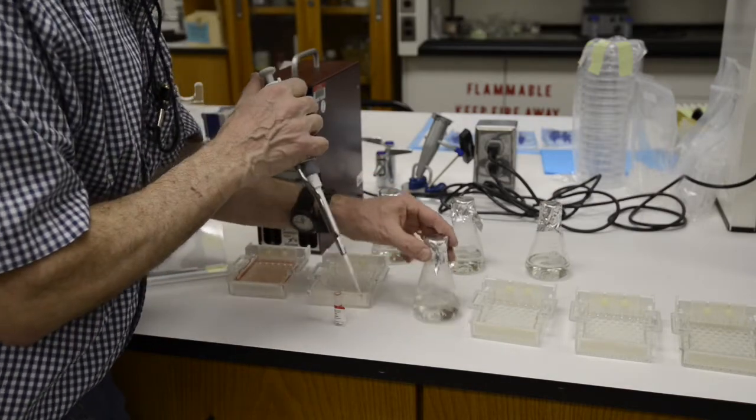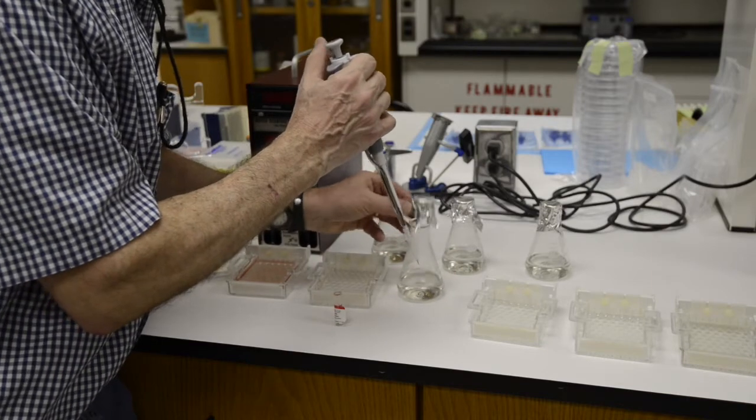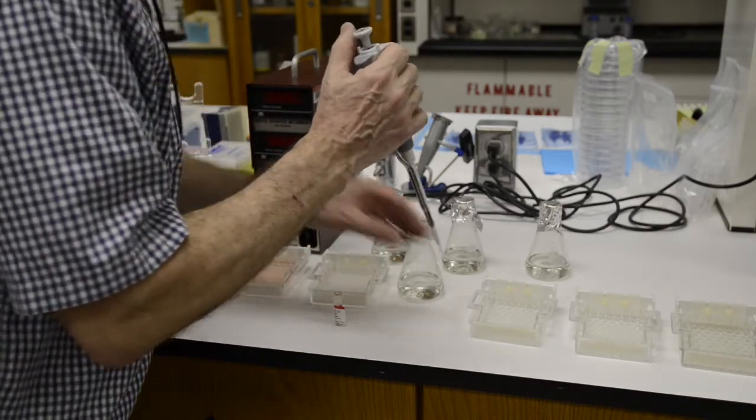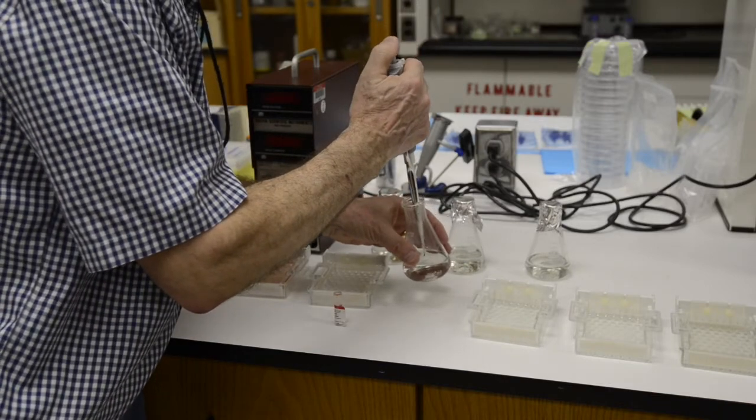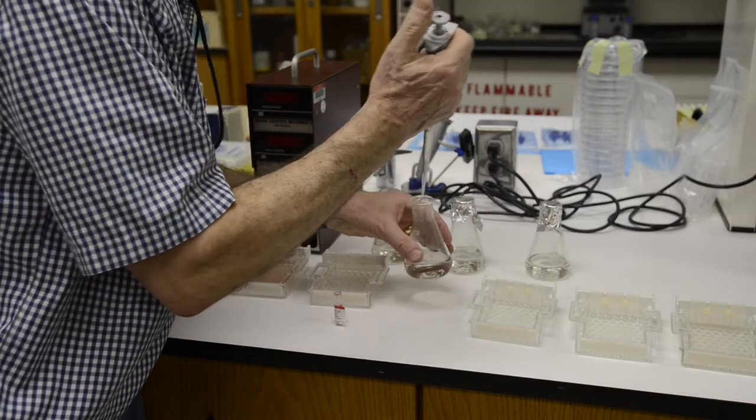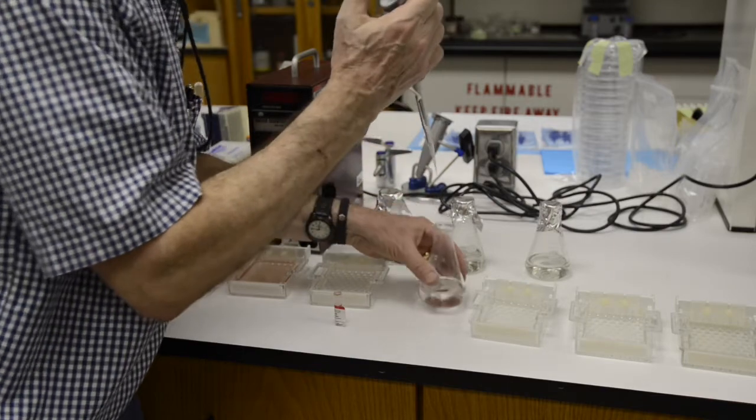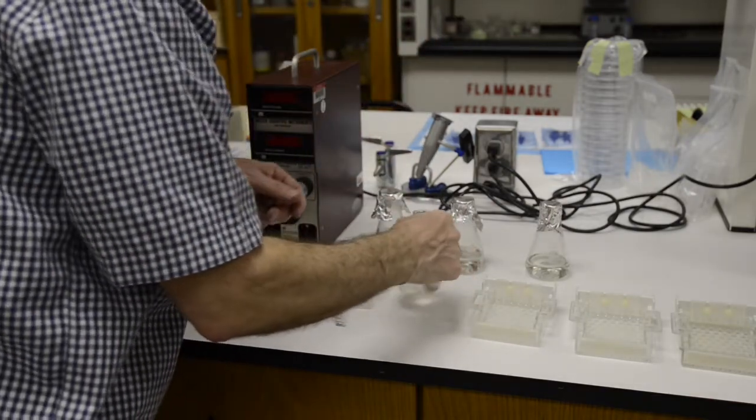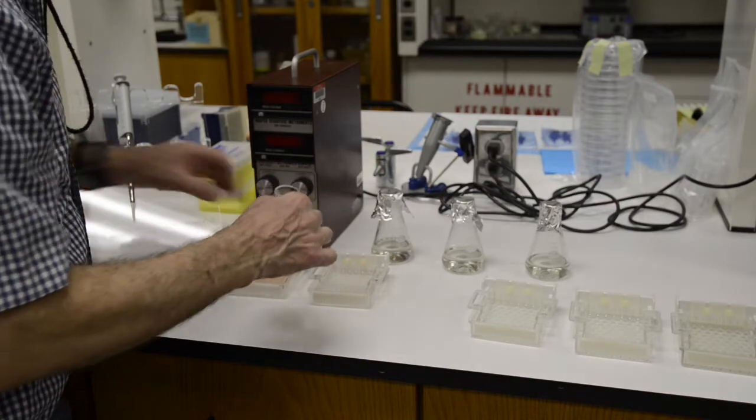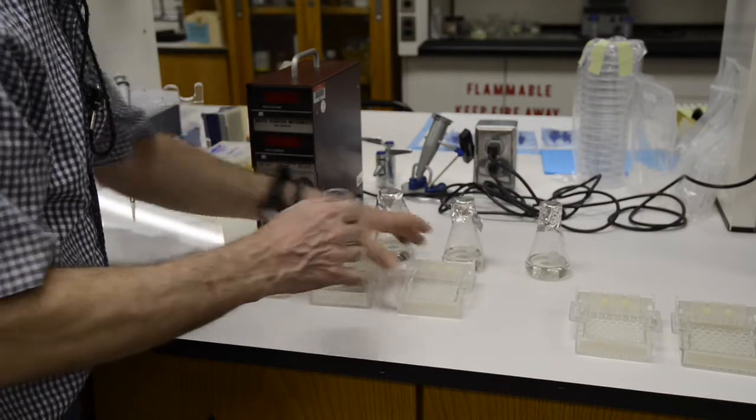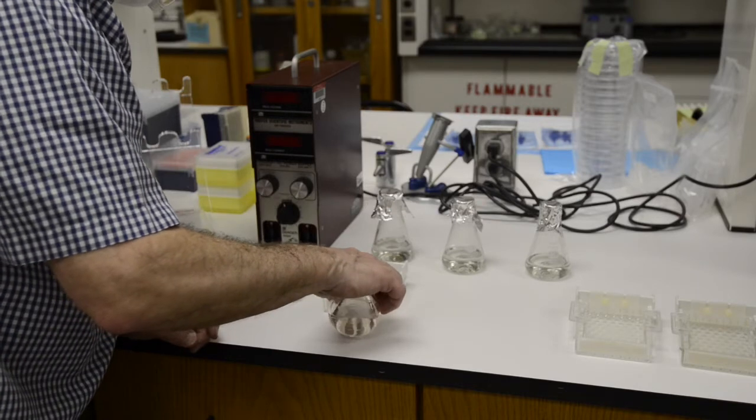So once more, the amount of gel red you're going to put into the 1% agarose is 5 microliters, 5.0 microliters. When you do that, the gel is not going to appear red. It will look pretty much clear. But under a fluorescent light, DNA will fluoresce red in the presence of that dye.